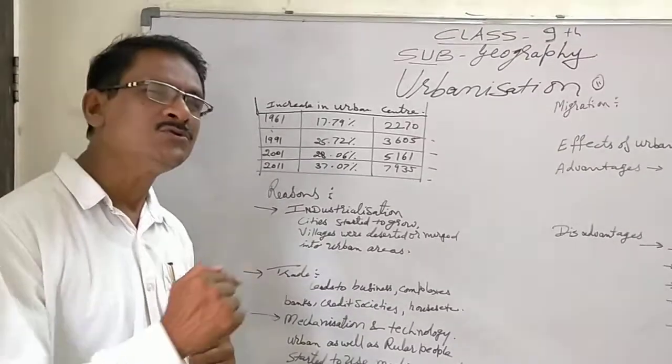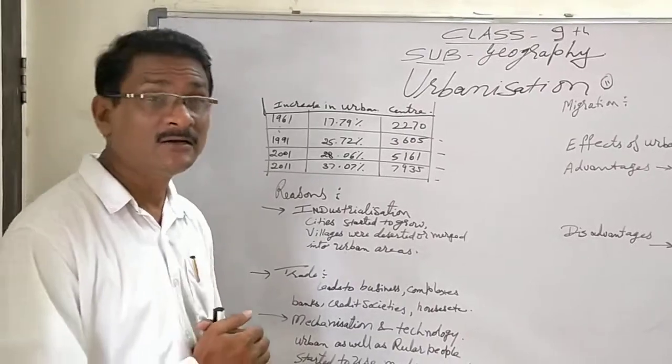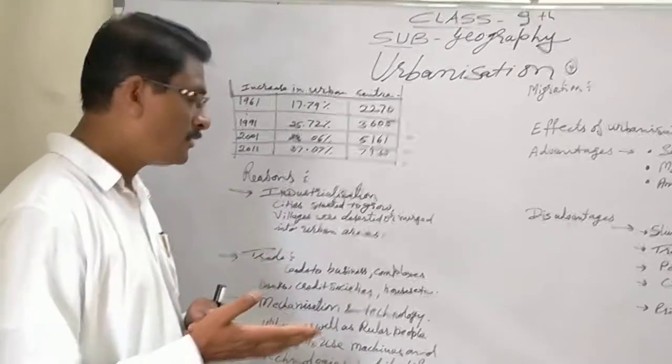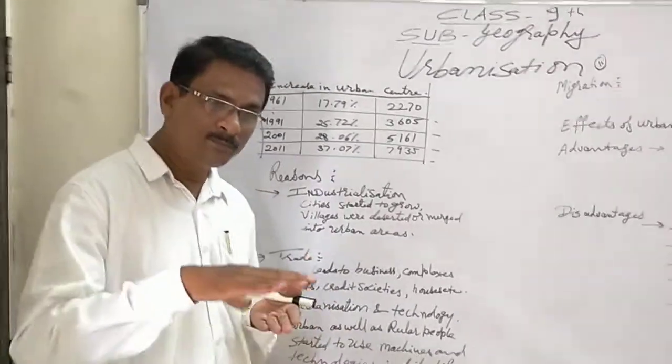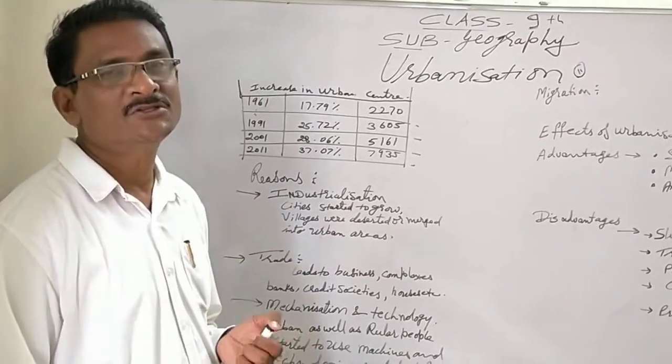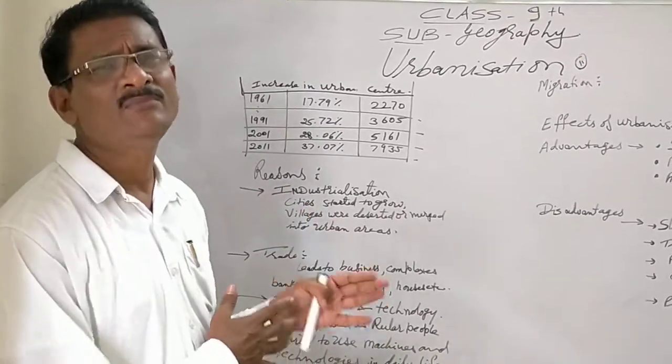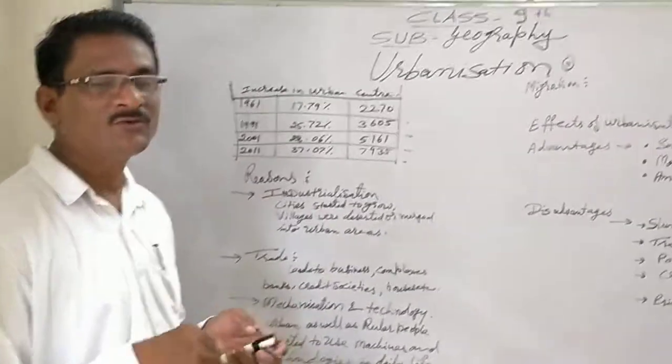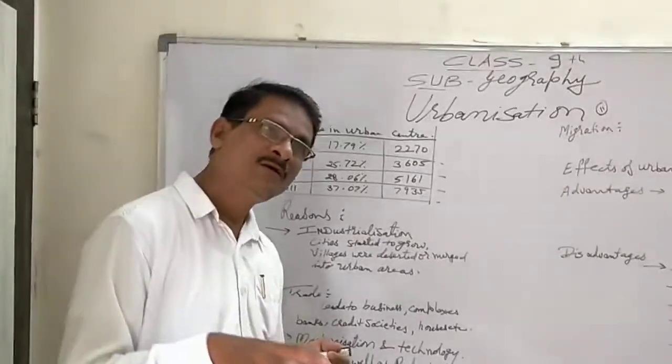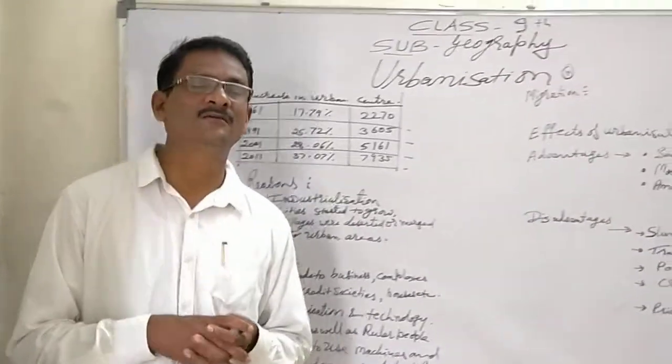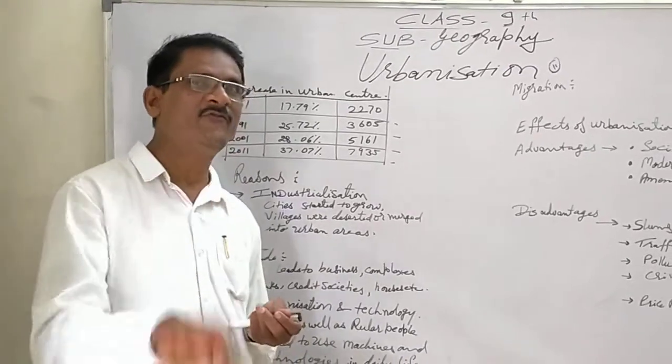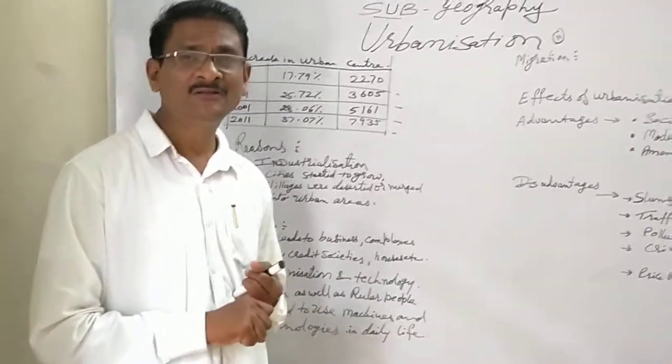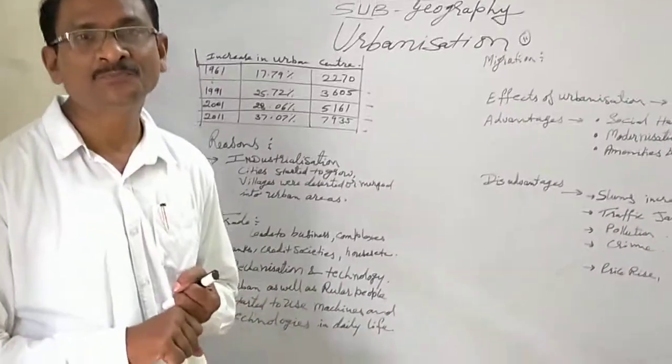Bhakra Nangal dam constructed on the river Sutlej, Haryana and Punjab, proved to be of utmost importance to Punjab and Haryana converting it into the storehouse of India. Because of this also the economic conditions started to rise. Similar examples can be seen from India where dams were constructed for irrigation. Water was also reserved in reservoirs.